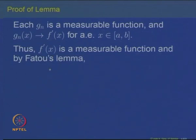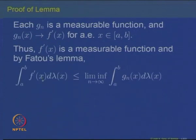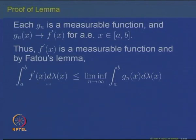By Fatou's Lemma, since f' is a limit of measurable functions it is measurable, and the integral of f'(x) — which is the limit of the gₙ's — will be less than or equal to the limit inferior of the integrals of gₙ over [a,b]. Fatou's Lemma states that if a sequence of non-negative functions converges to a function, then the integral of the limit is less than or equal to the limit inferior of the integrals.